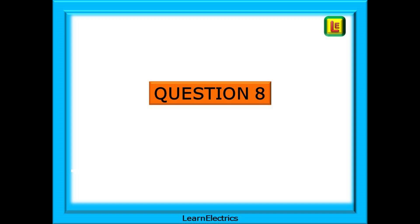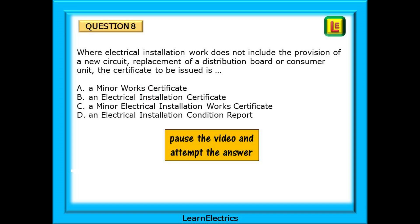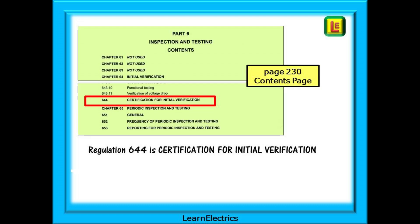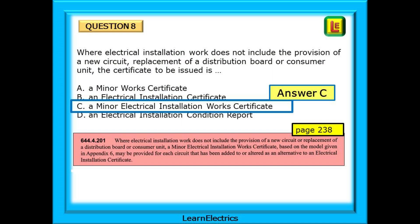Question 8: where electrical installation work does not include the provision of a new circuit nor the replacement of a distribution board or consumer unit, the certificate to be issued is — and four choices. This is installation work so the answer is in chapter 64. Looking at page 230, we can see Regulation 644 — certification for initial verification. Regulation 644.4.201 on page 238 gives the correct answer: Minor Electrical Installation Works Certificate. Answer C. Answer A looks plausible but is not exactly what it says in the regulation. It must be Minor Electrical Installation Works Certificate — answer C.